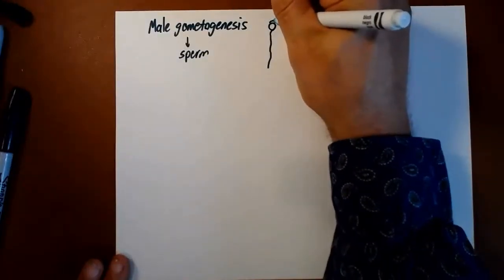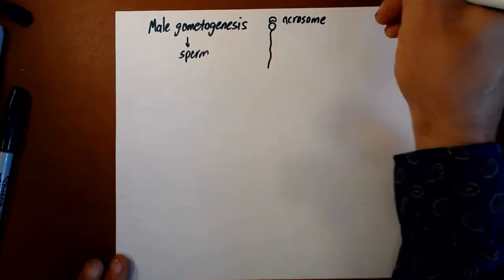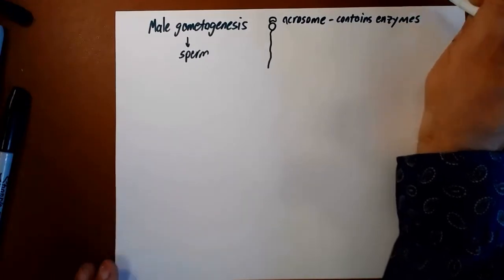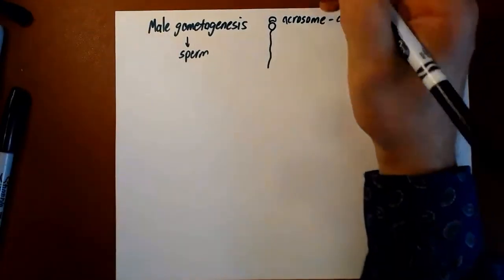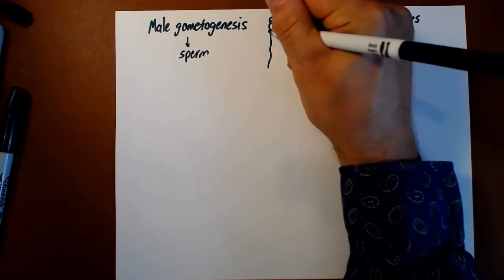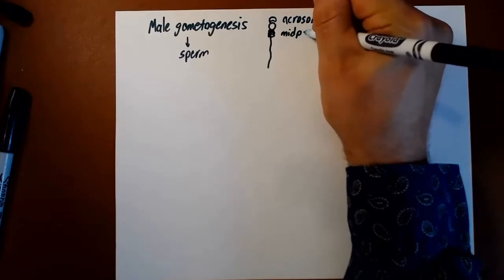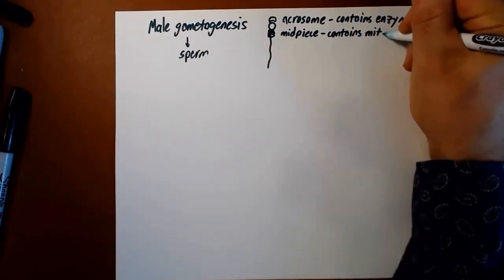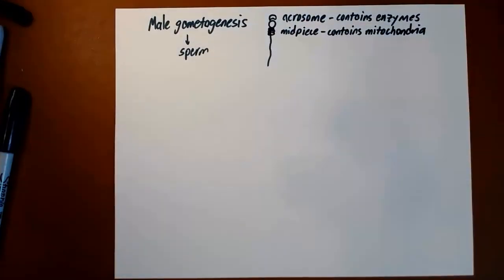They also contain this little cap called an acrosome. This contains enzymes which help the sperm to get through these layers of gelatinous material that surround the secondary oocyte, enabling fertilization. There's also a mid-piece attached outside the sperm cell body. This contains mitochondria. In order to power that flagella, that tail, we need mitochondria to do metabolism to produce ATP to let this thing run.